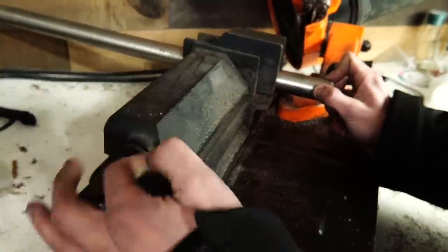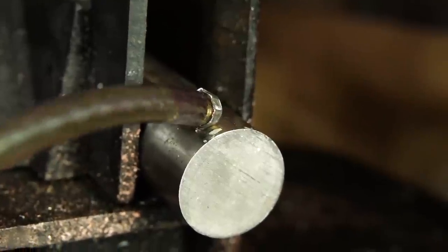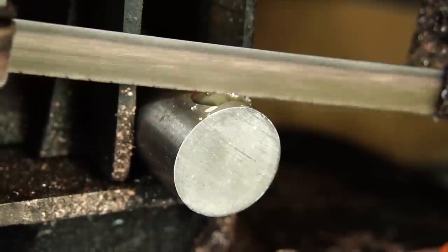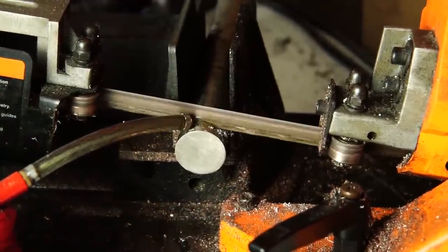All right, as I do with almost every ring that's made from round bar, I need to cut off a slice for a ring blank. So I'll go ahead and do that with my metal bandsaw. And remember, we're making two rings here. So I'm just going to cut off two blanks.